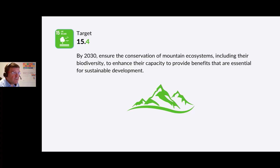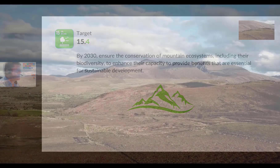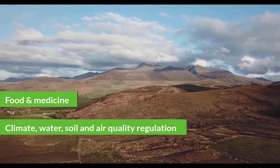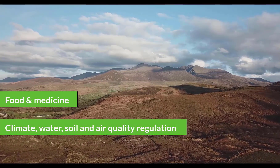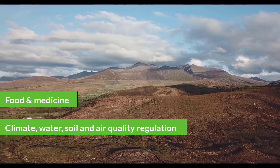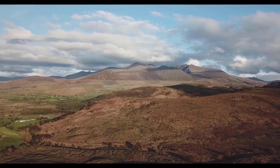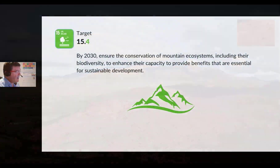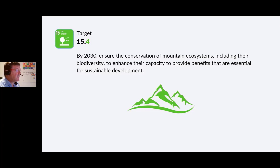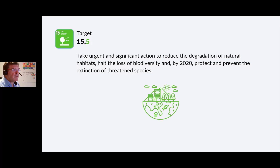Target 15.4: By 2030, ensure the conservation of mountain ecosystems, including their biodiversity, to enhance their capacity to provide benefits essential for sustainable development. Globally, mountains provide food and medicine, as well as climate, water, soil and air quality regulation to humankind. Mountain ecosystems are under pressure from land use change, climate change, over-exploitation, invasive species and pollution. The two indicators are coverage by protected area of important sites for mountain biodiversity, and the mountain green cover index.